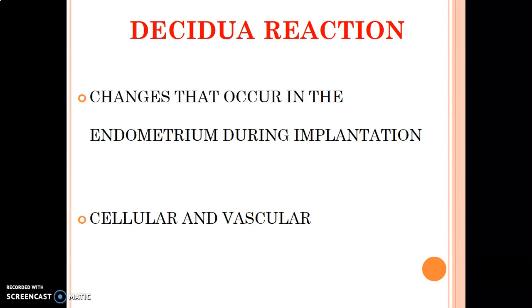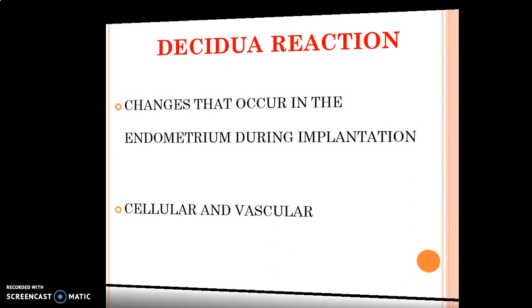When the endometrium gains substances such as glycoproteins and endometrial glands, and fluid in the endometrial glands increases, all these support the developing fetus — that is the decidua reaction. These changes occur at both the cellular and vascular level, increasing blood vessels to establish good fetal-maternal circulation.